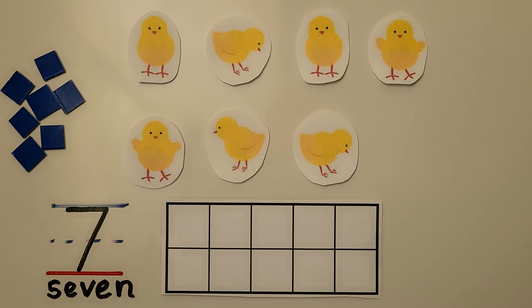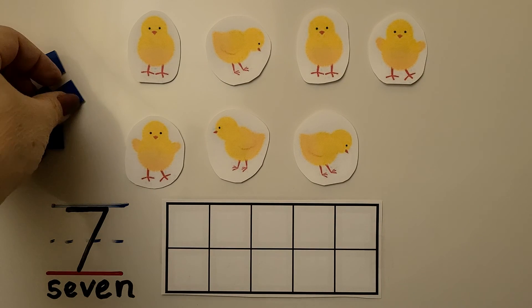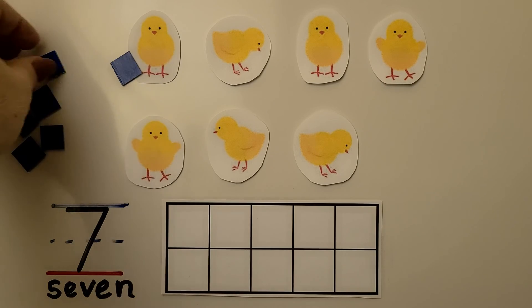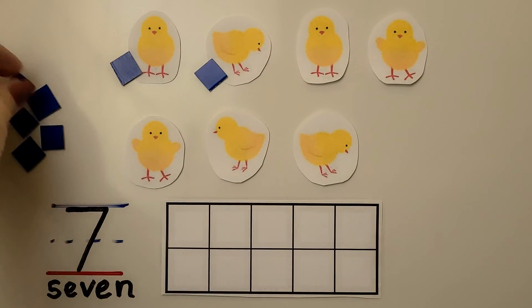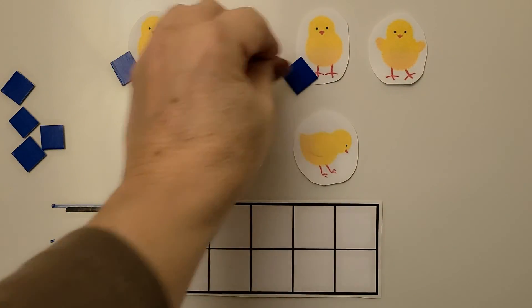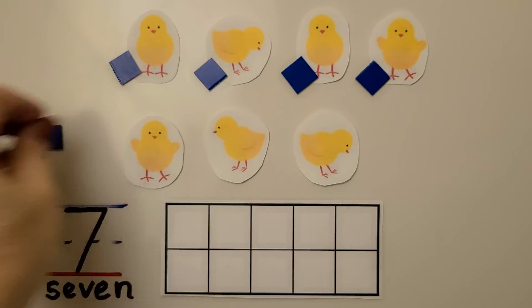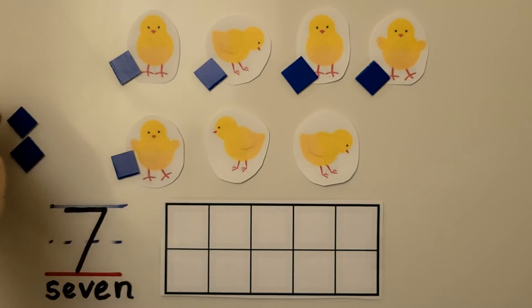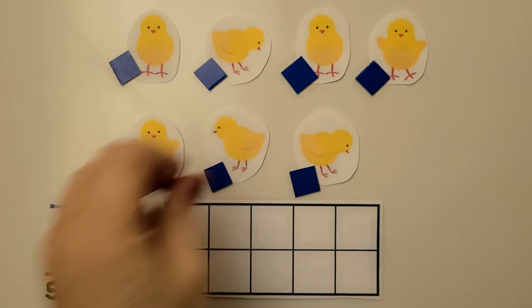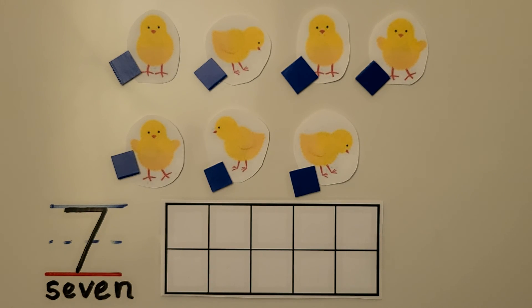Here we have many baby chicks. We can count them with our counters. We have 1, 2, 3, 4, 5, 6, 7. There's 7 chicks.